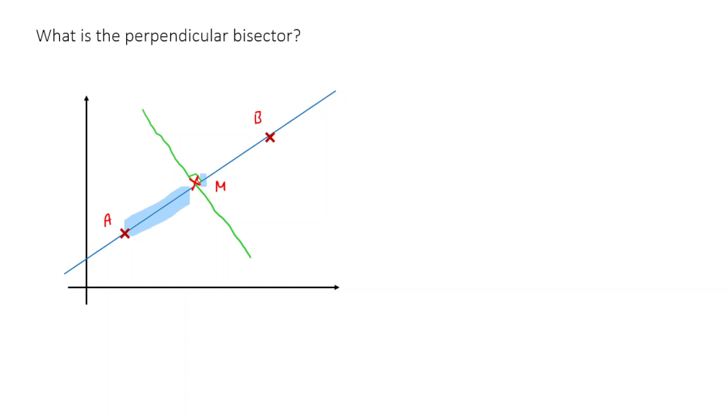Here to here and here to here. That's what bisector means. It means something that divides into two halves. And the perpendicular bit is obvious, right? It's just that this line, the green line, must be perpendicular to AB.